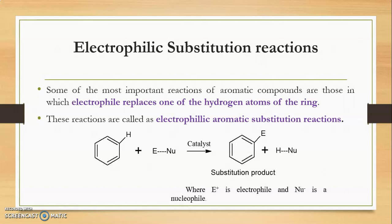Before explaining this reaction, let us revise what is the meaning of electrophile and nucleophile. Electrophile means it is an electron-loving species, and nucleophile means it is a nucleus-loving species. As electrophiles are electron-loving species, and electrons have a negative charge, the species attracted towards electrons must have a positive charge. So electrophiles are nothing but positively charged ions or positively charged species.